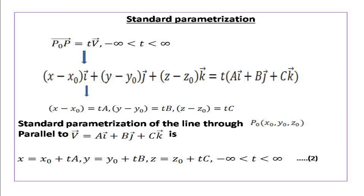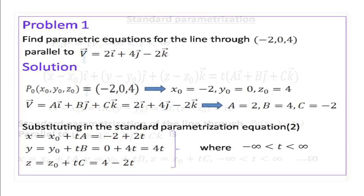Thus, the standard parametrization of the line through P0(x0, y0, z0) parallel to vector V = Ai + Bj + Ck is: x = x0 + tA, y = y0 + tB, z = z0 + tC, where negative infinity less than t less than infinity.